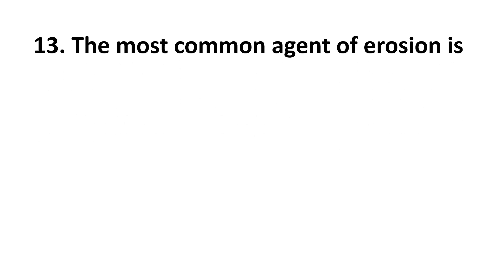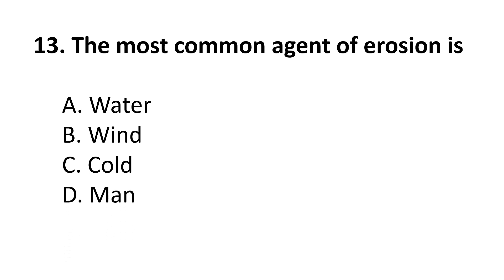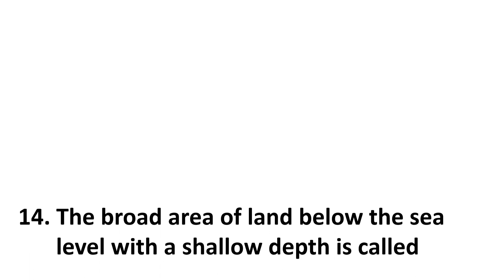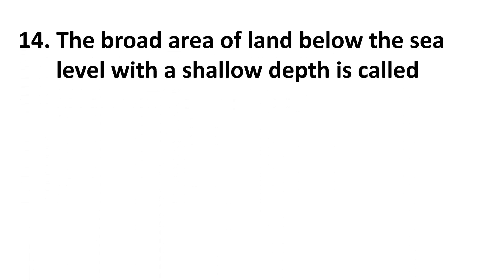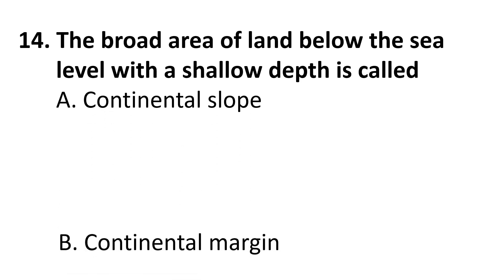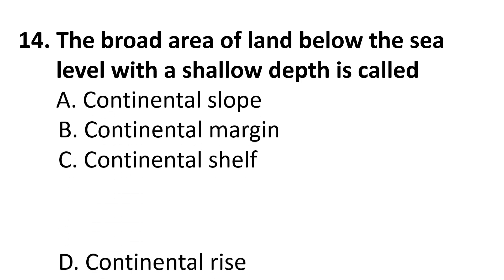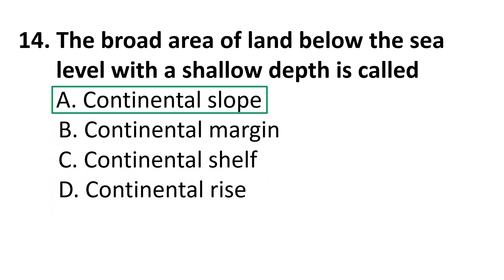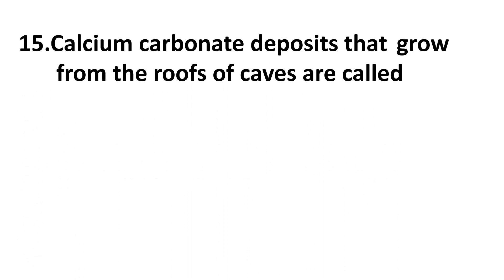The correct answer is A: parabolic dunes. Thirteenth question: the most common agent of erosion is — A) water, B) wind, C) cold, D) man. The correct answer is A: water. Coming to the fourteenth question: the broad area of land below sea level with a shallow depth is called — A) continental slope, B) continental margin, C) continental shelf, D) continental rise. The correct answer is A: continental slope.